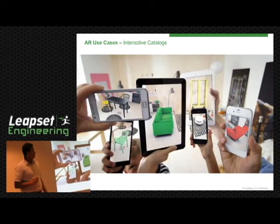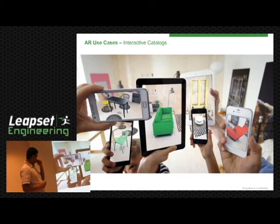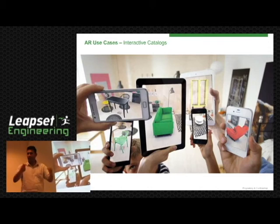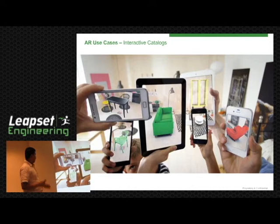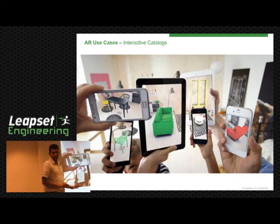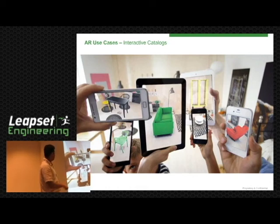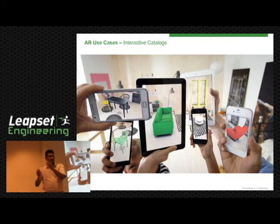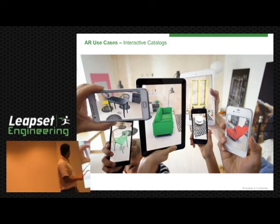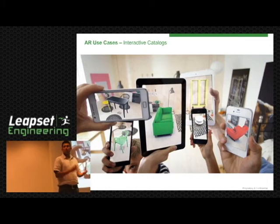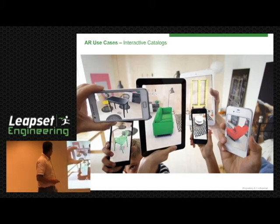Interactive catalogs. This is from a US company called IKEA — they are into furniture. What they have done is an application: this is your reality — a house without furniture. You pick up your phone or device, there is a virtual piece of furniture there, and you can go around and see how best it fits into your environment. You can see how your environment is planned before buying the furniture.